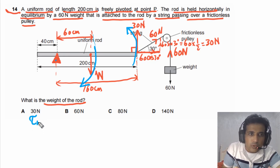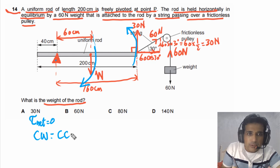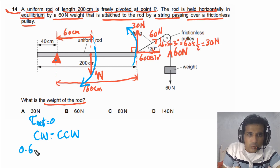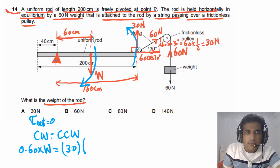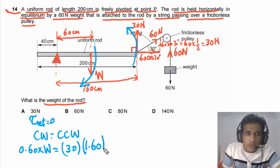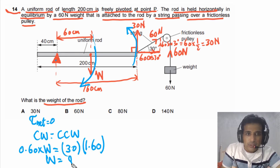Since the rod is in equilibrium, the net torque equals zero, meaning clockwise moment equals counterclockwise moment. The clockwise moment due to the weight of the rod is 0.60 times W. The counterclockwise moment due to the perpendicular component of tension is 30 newtons times 1.60 meters. Solving for W gives a weight of 80 newtons. So the answer for this question is C.